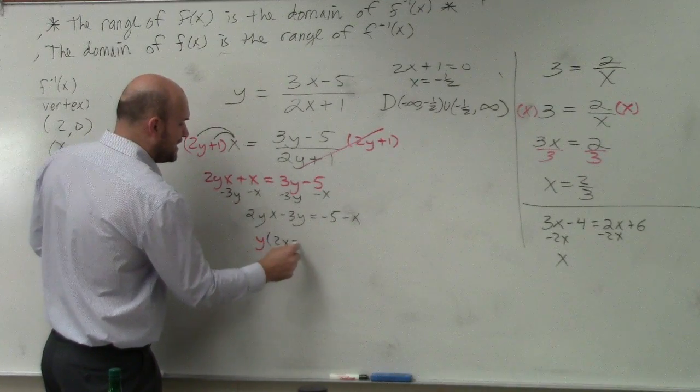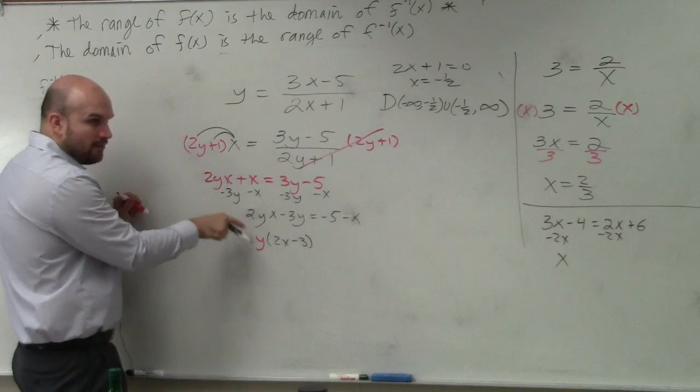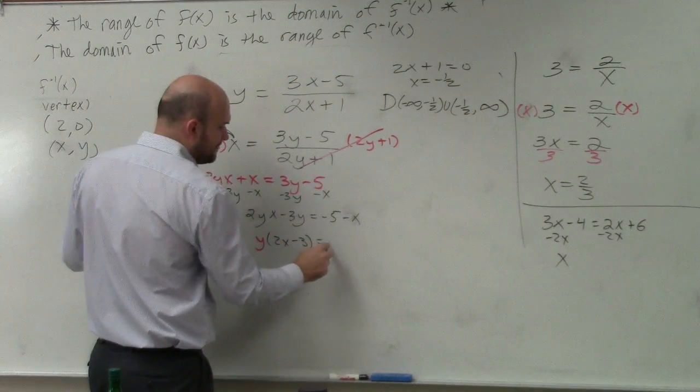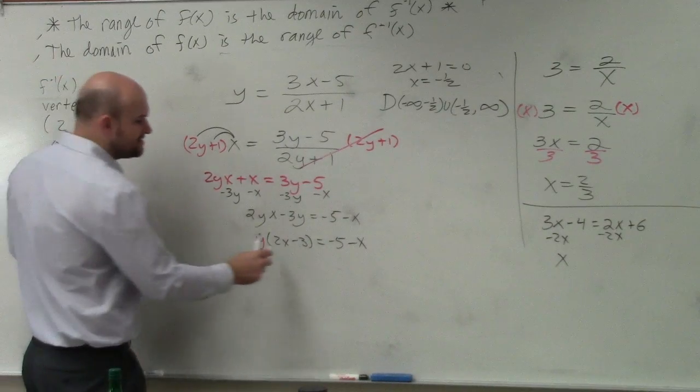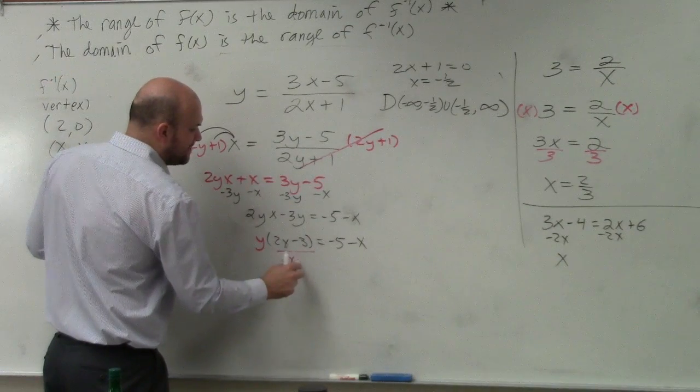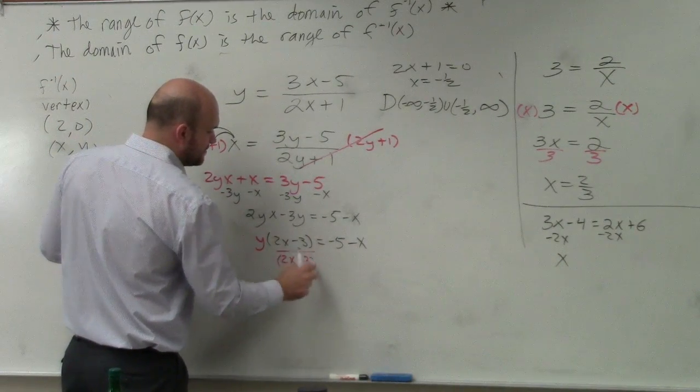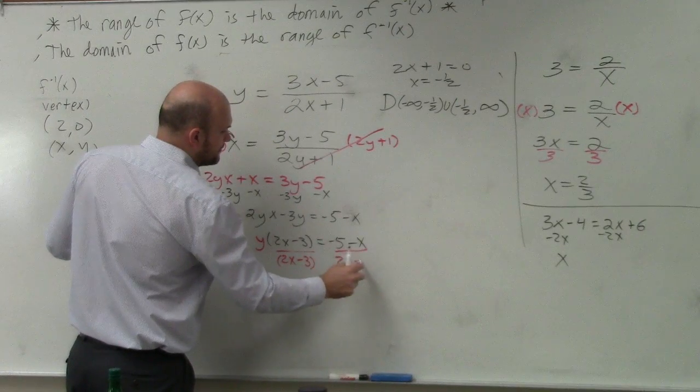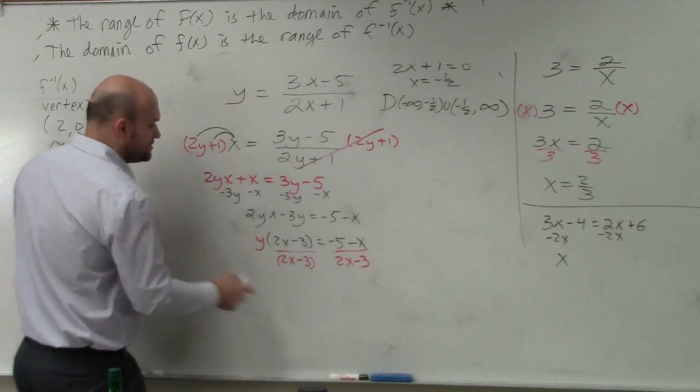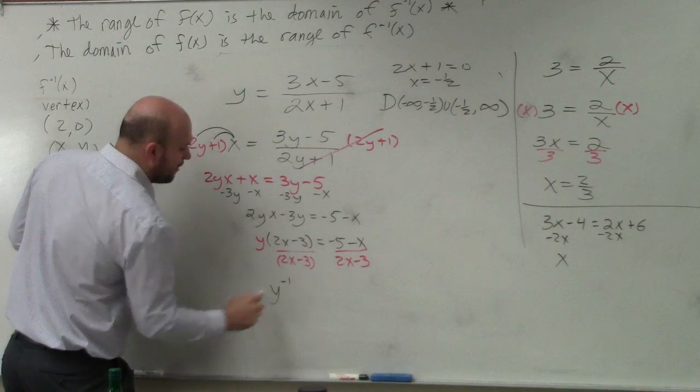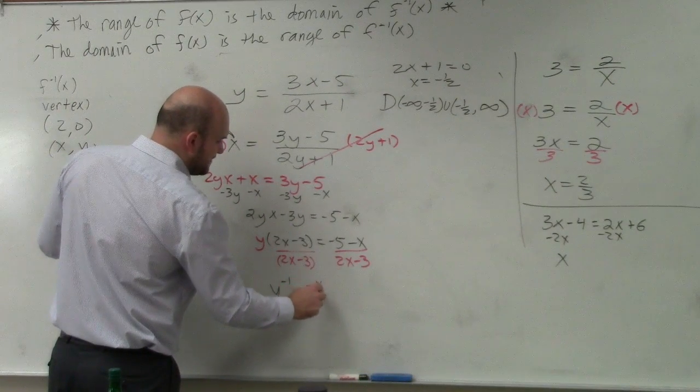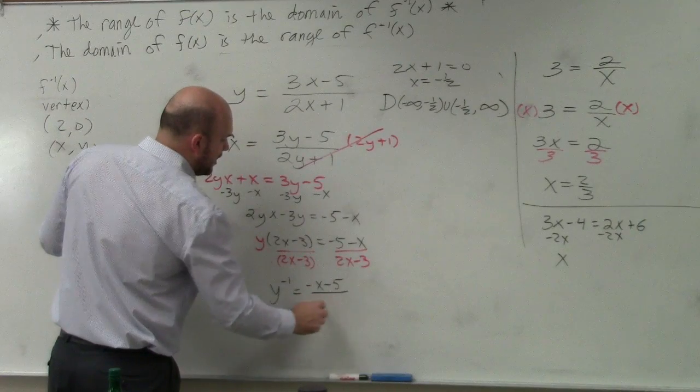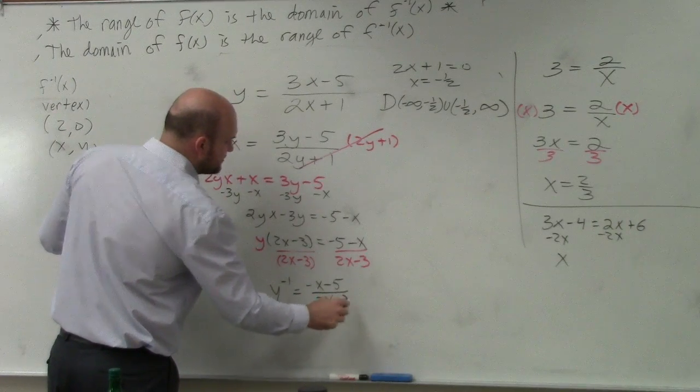By factoring out the y, I now isolate the variable y. And now I can solve for y by dividing by 2x minus 3. So therefore, my final equation, y inverse, is equal to, I'll write the x in front, negative x minus 5 all over 2x minus 3.